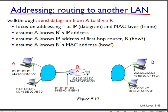That is, it wants to send a datagram across a router onto another subnet. Take a look at figure 5.19, which shows a simple network consisting of two subnets interconnected by a router.